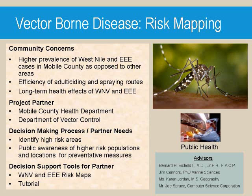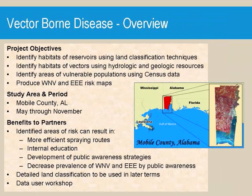Our partners that would benefit from this study would be the Mobile County Health Department and the Mobile Department of Vector Control. Some of the objectives of this project were to identify habitats of vectors using hydrologic and geologic resources, habitats of reservoirs using land classifications, and identifying areas of vulnerable populations using census data. By putting all of this data together, a single risk map was constructed.